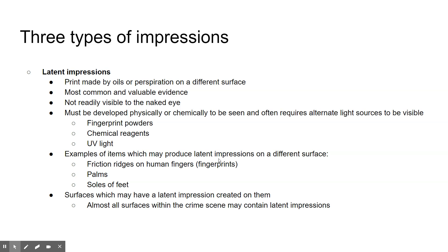Latent impressions are invisible to the naked eye and usually made by oil or perspiration on a surface. They are the most common and most valuable type of impression evidence. They have to be developed either physically or chemically using things like fingerprint powder, chemical reagents, or UV light. You can get latent impressions from your fingerprints, palm prints, and the soles of your feet, and almost all surfaces in a crime scene have the potential to have latent impressions on them.